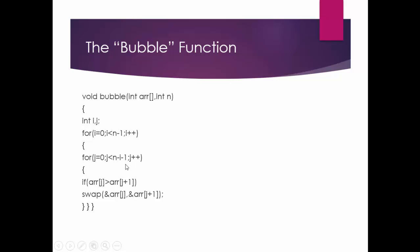For j equal to 0, j is less than n minus i minus 1, j plus plus — this is a nested for loop. Why do we go to n minus i minus 1? Because as you can see, the last element was already sorted — the greatest element went to the last. So we need to do one less comparison each time; we sort the first five elements only and ignore the last one.